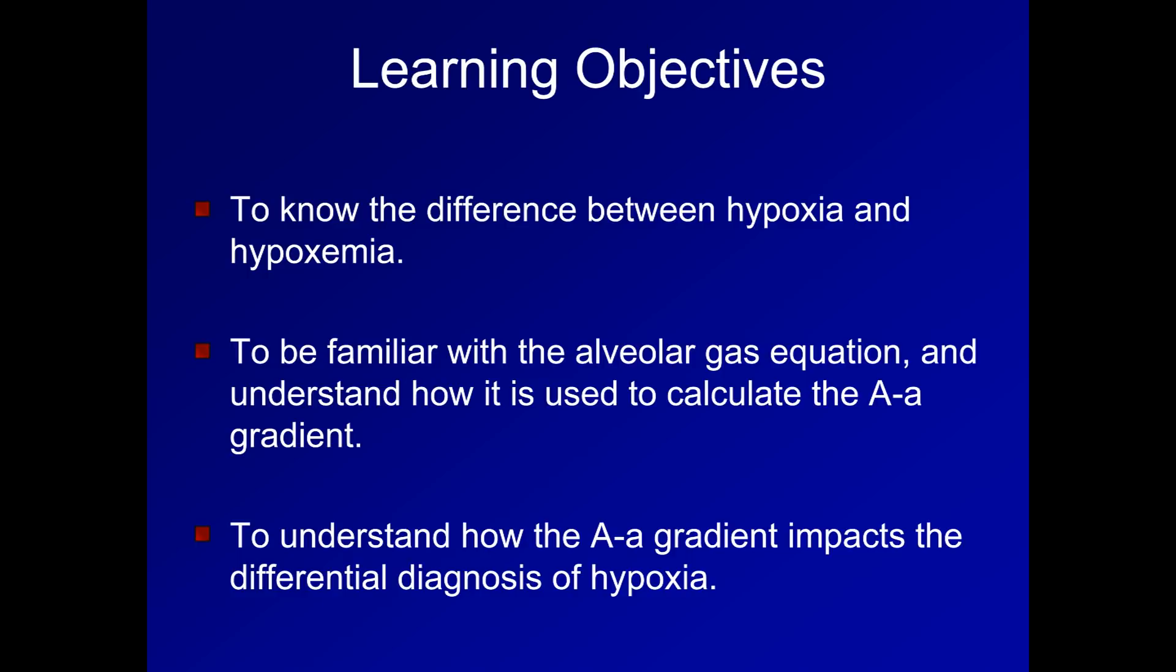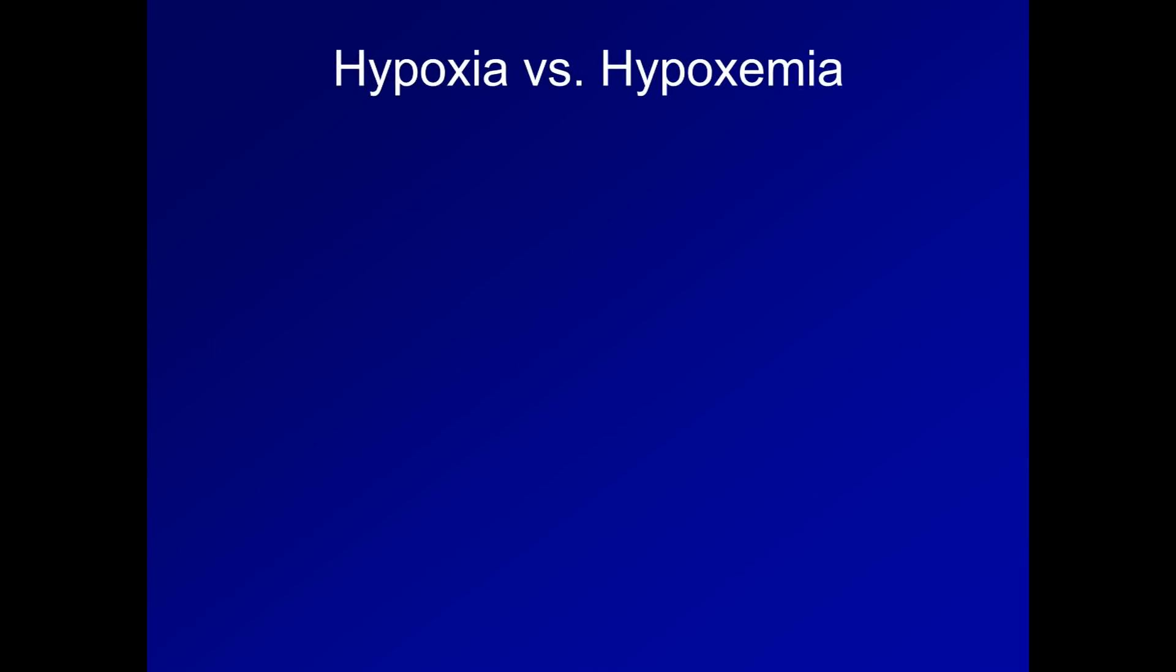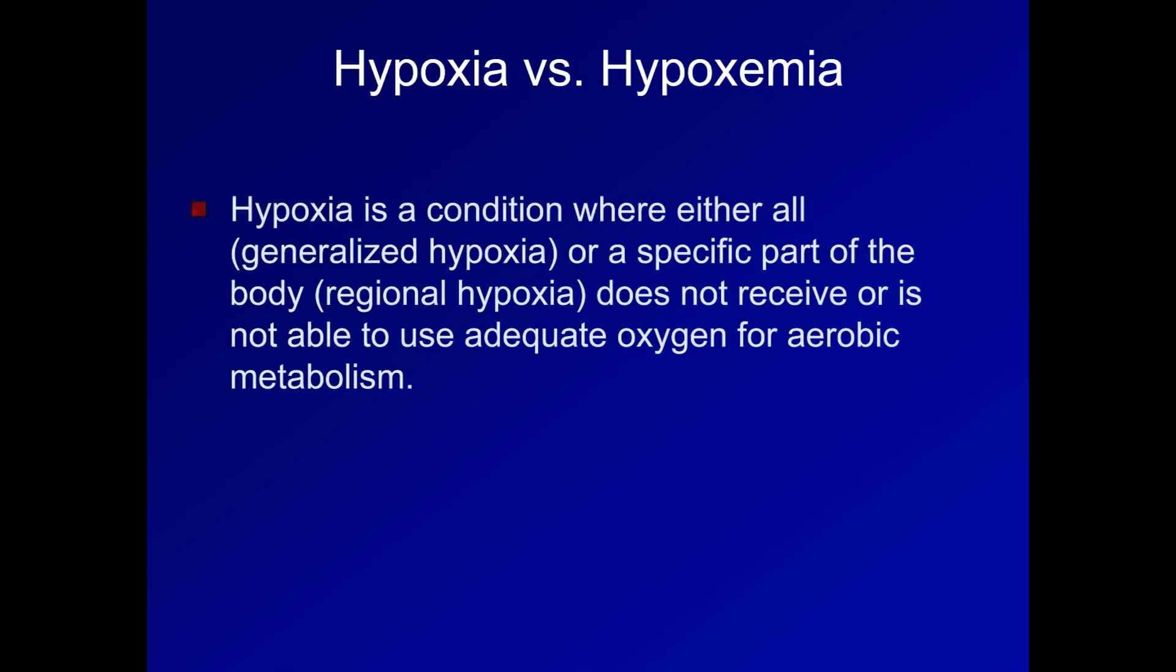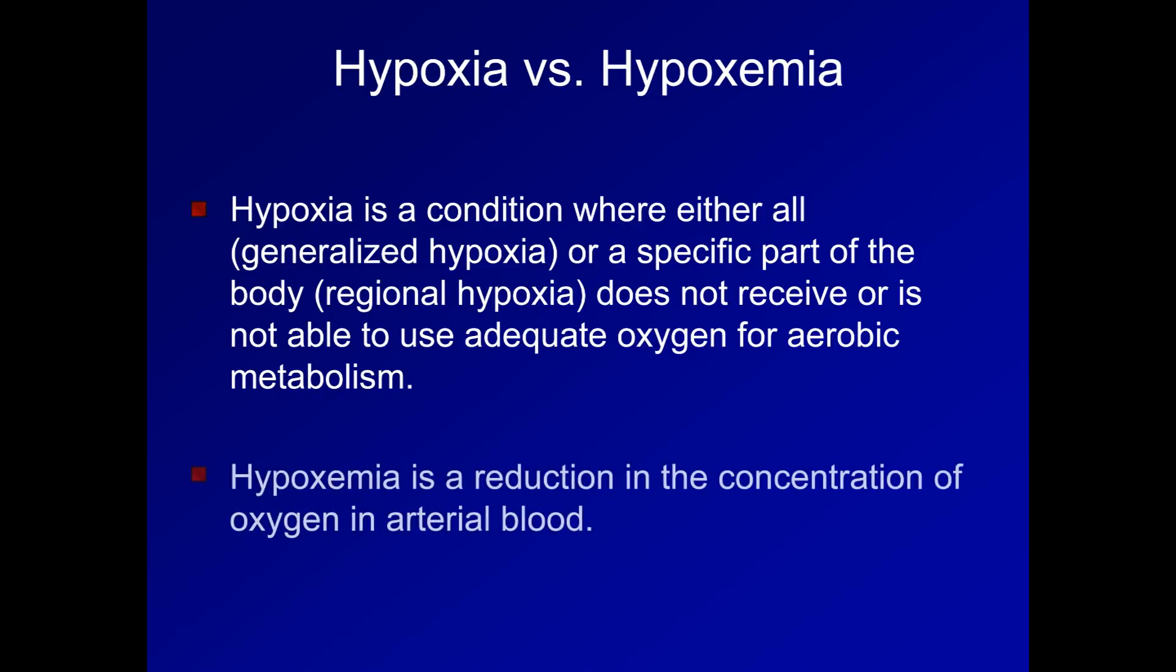The first thing to discuss is the difference between the terms hypoxia and hypoxemia. Although they are frequently used interchangeably, it's important to realize that they are not synonymous. Hypoxia is a condition where either all or a specific part of the body does not receive or is not able to use adequate oxygen to maintain aerobic metabolism. Hypoxemia, on the other hand, is a reduction in the concentration of oxygen in arterial blood.